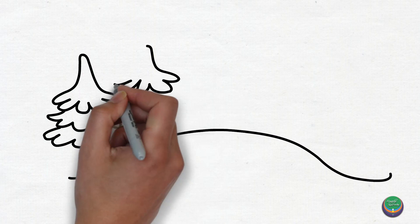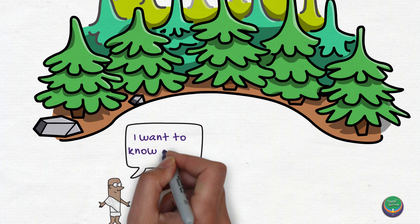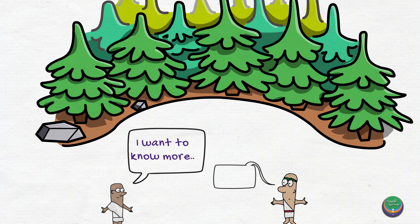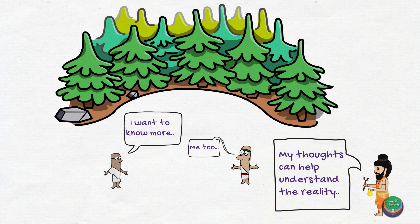How did these darshanas originate? In ancient times, people were worried about the different types of miseries that existed. They were curious about everything around them like the universe, its origin, its purpose, the purpose of their lives, and means to attain happiness. Many seers had their own intellectual and spiritual testimonies regarding these questions, and these became the foundation of different philosophical schools in India.